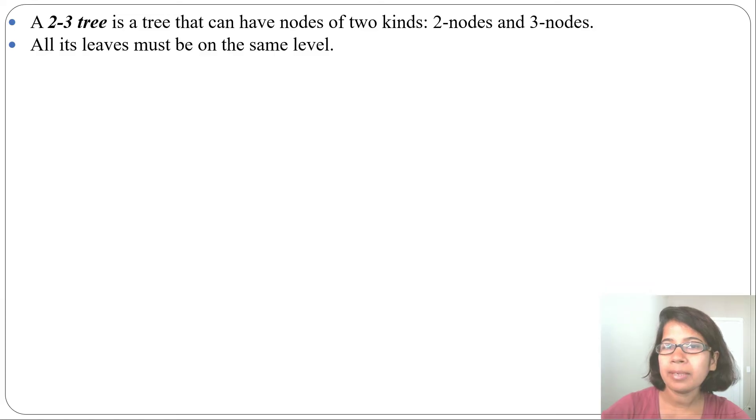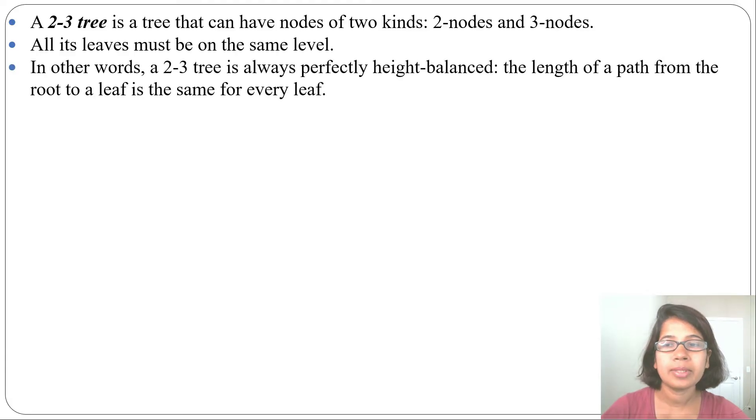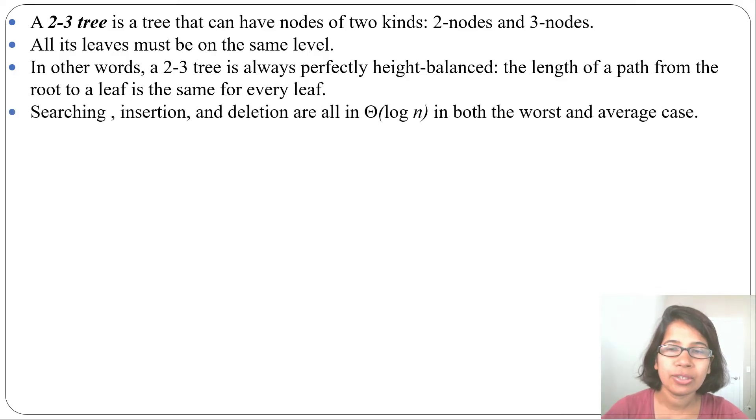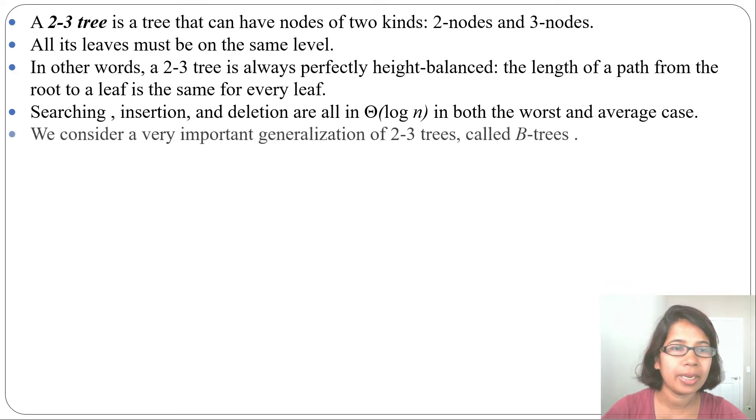In every tree all leaves are not at the same level, but in a 2-3 tree it is perfectly height balanced. All leaves are at the same level. The length of the path from root to all leaves is the same.